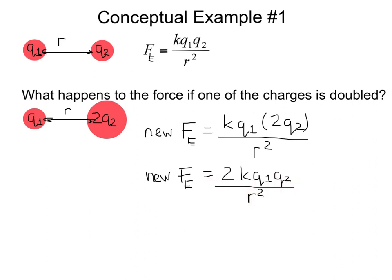Rewriting this gives us 2 times K times Q1 times Q2 divided by R squared. But look closely. K Q1 Q2 divided by R squared is just the original electric force here when Q1 and Q2 are separated by the distance R. Thus, we have 2 times that amount of force now. So we can see the new electric force is 2 times the old electric force. It doubles.